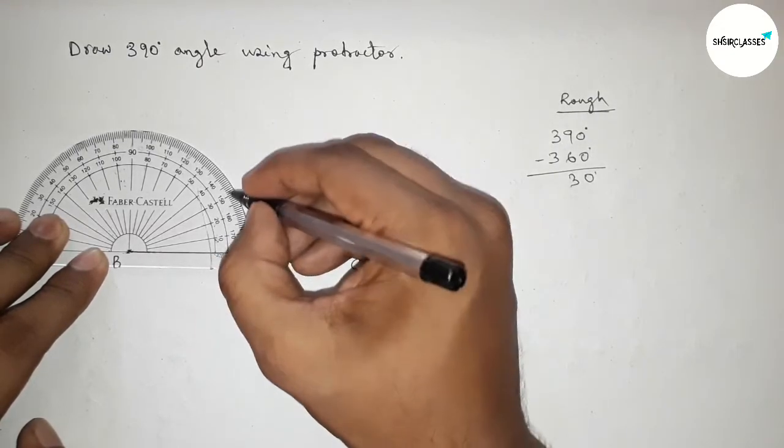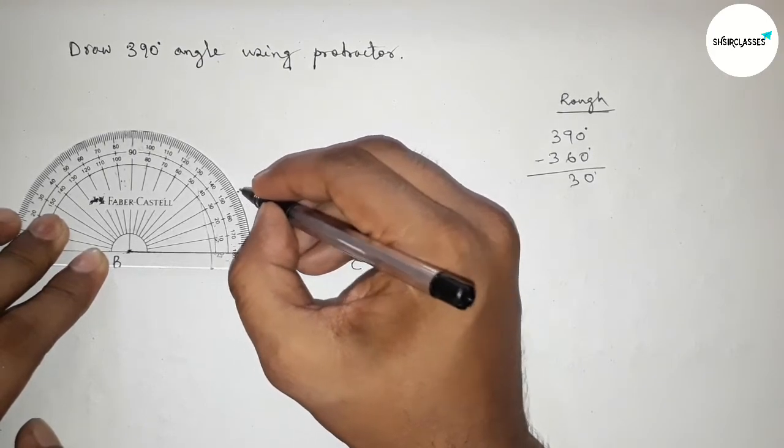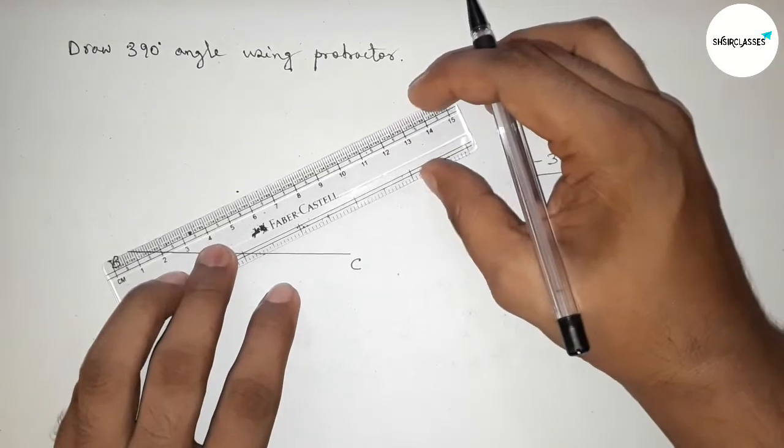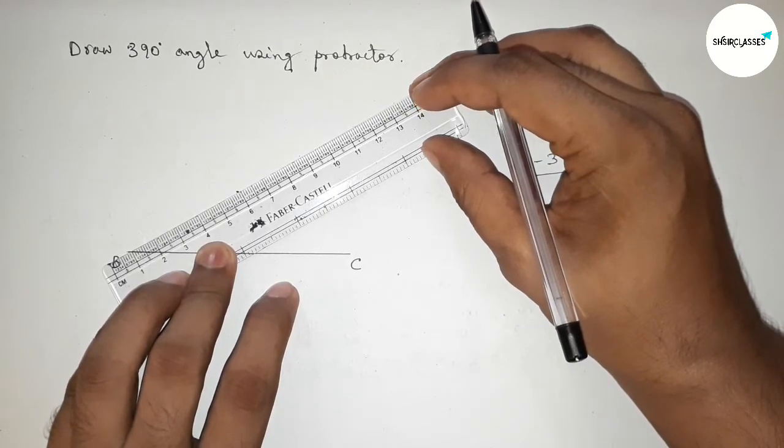Now joining here, so now joining this line to get 30-degree angle and taking here a point A.